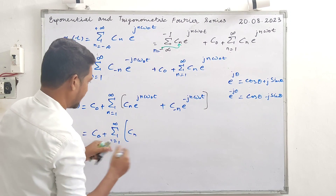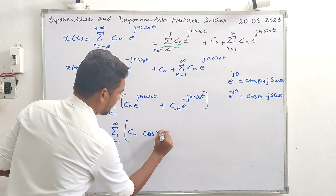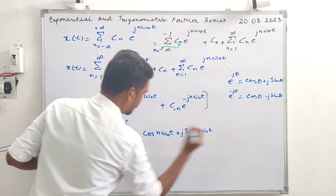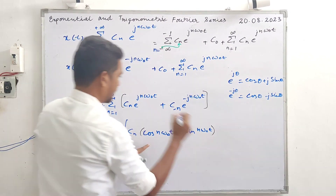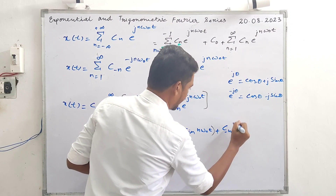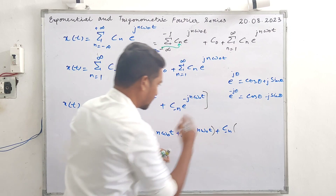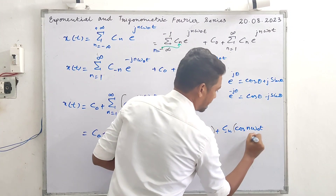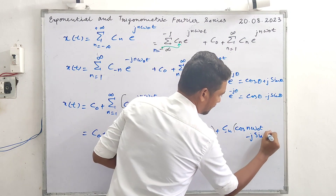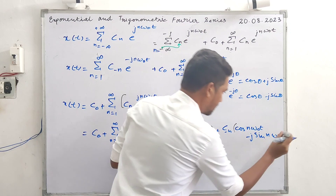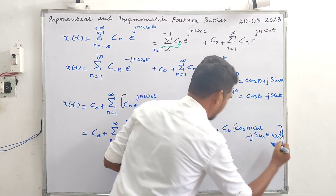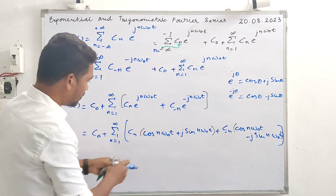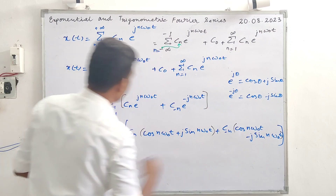Applying Euler's identity, c_n expands to cos(n omega-naught t) plus j sine(n omega-naught t), and c of minus-n expands to cos(n omega-naught t) minus j sine(n omega-naught t). We then collect the cosine and sine terms together.